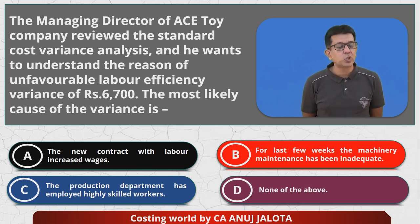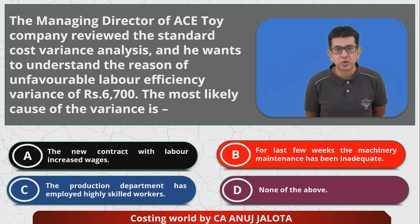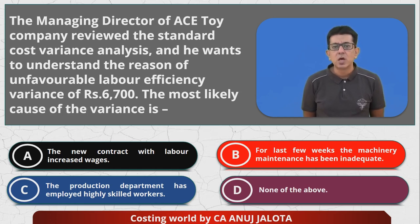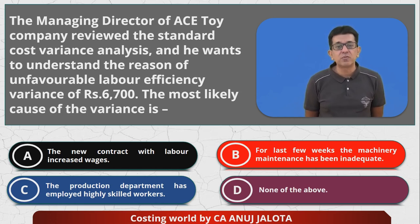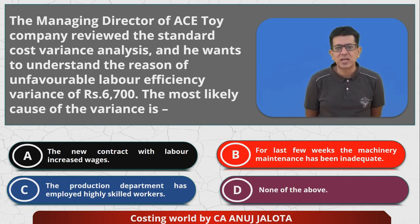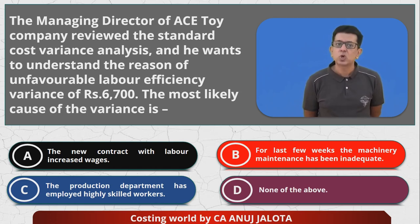First, what do you mean by efficiency variance? Efficiency variance means how many hours workers should have taken versus how many hours they actually took. If they took more hours, they are inefficient and the variance becomes adverse. With that logic, option A cannot be the answer — if you renewed a contract with a higher wage rate, that affects the rate variance, not the efficiency variance.